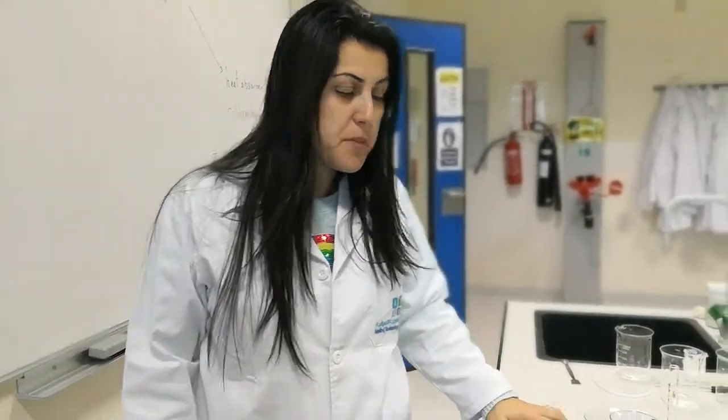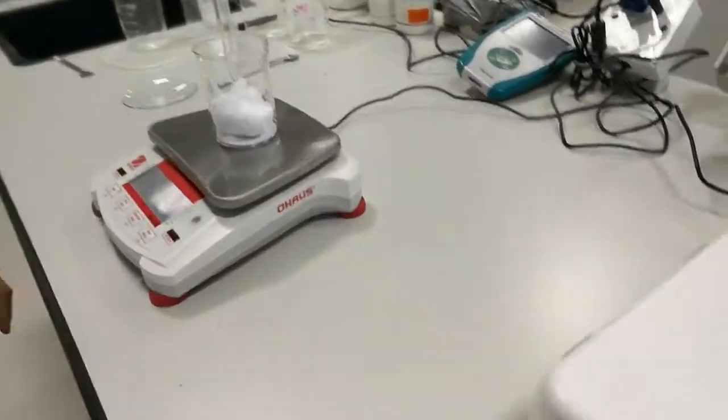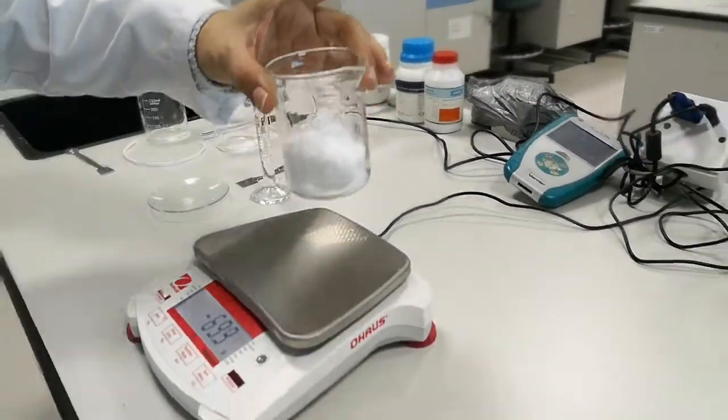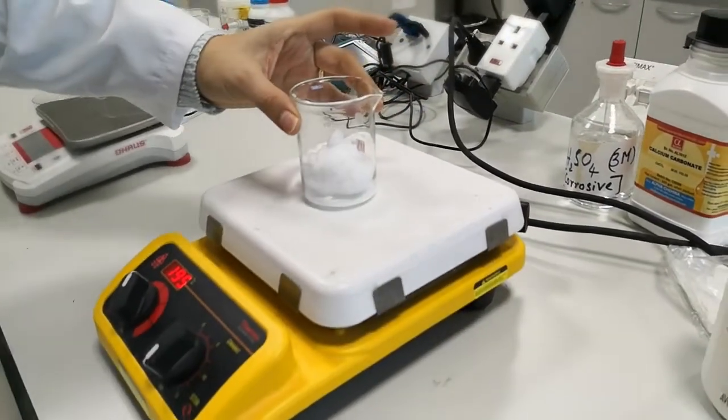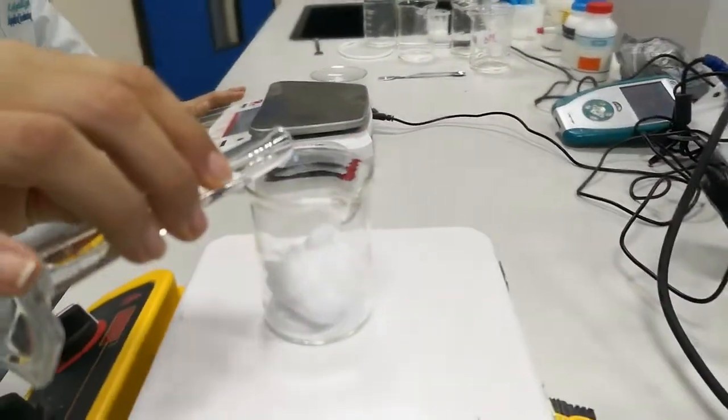This is the experiment of the formation of crystals using sodium acetate. I have here measured around 50 grams of sodium acetate. I am going to put it on a hot plate and add approximately 5 milliliters of water.